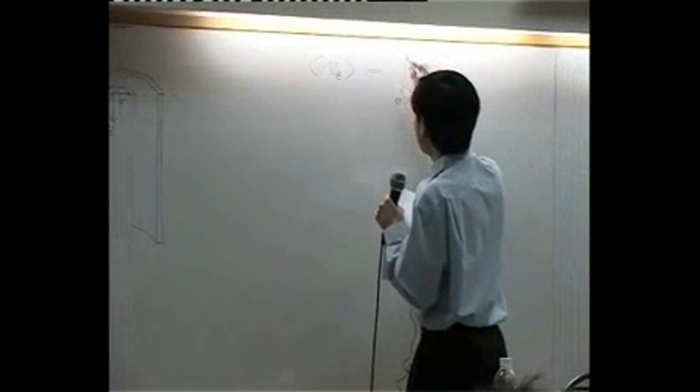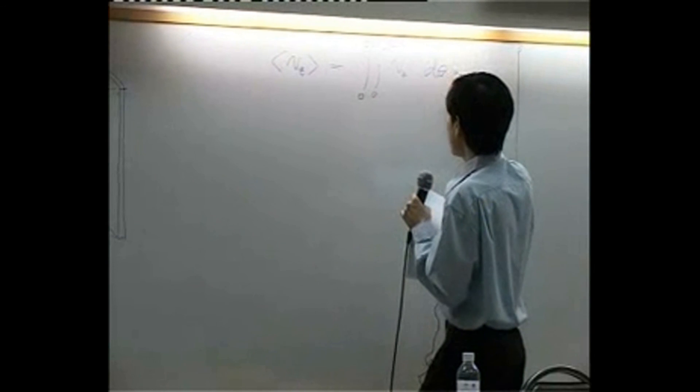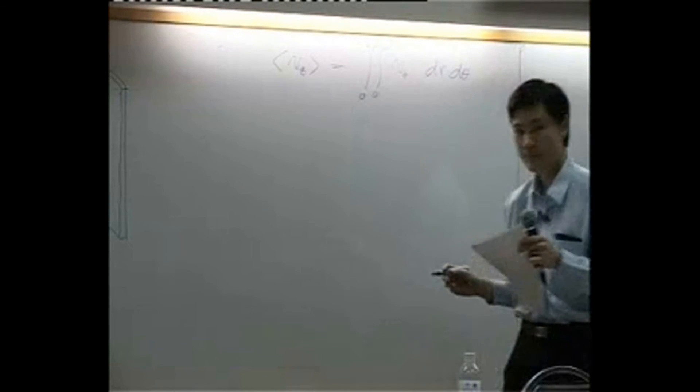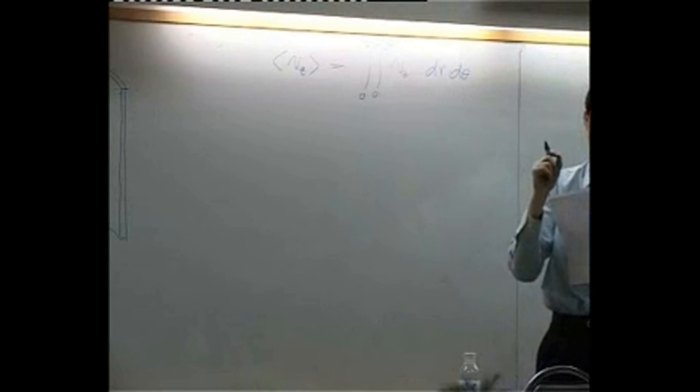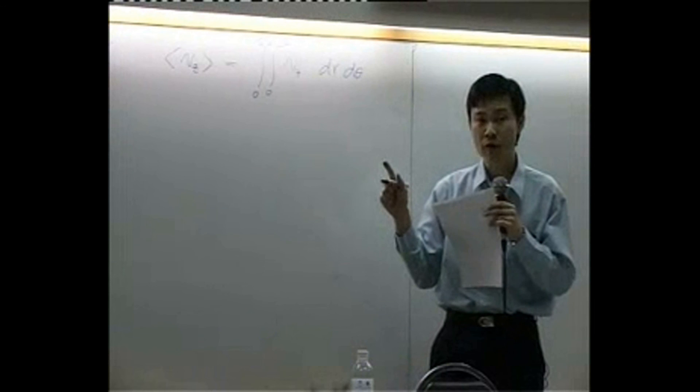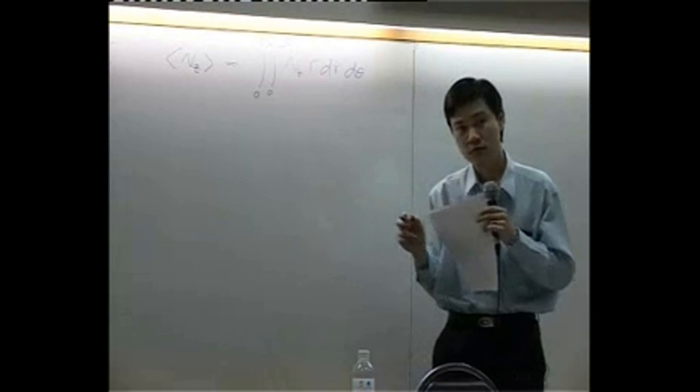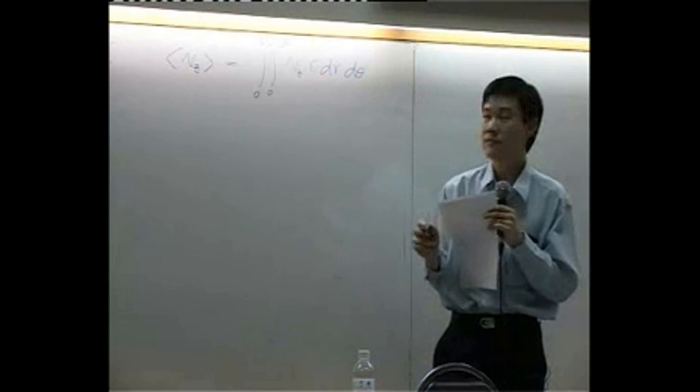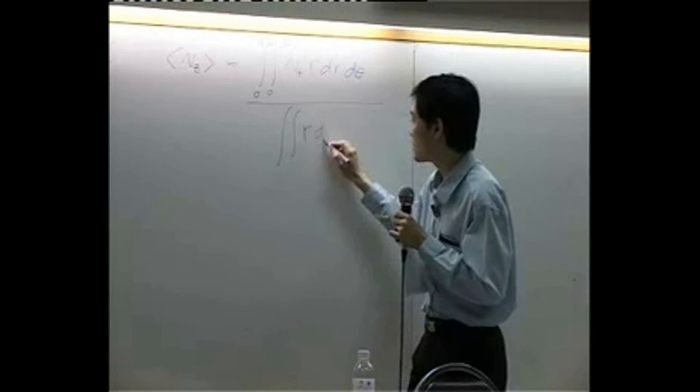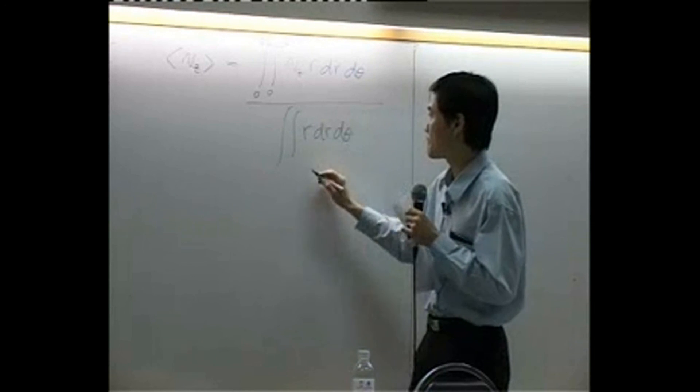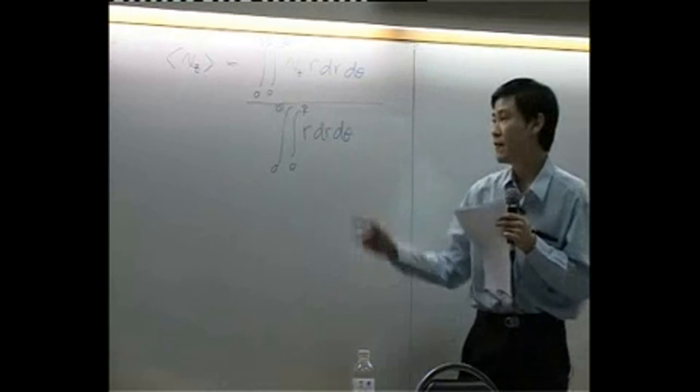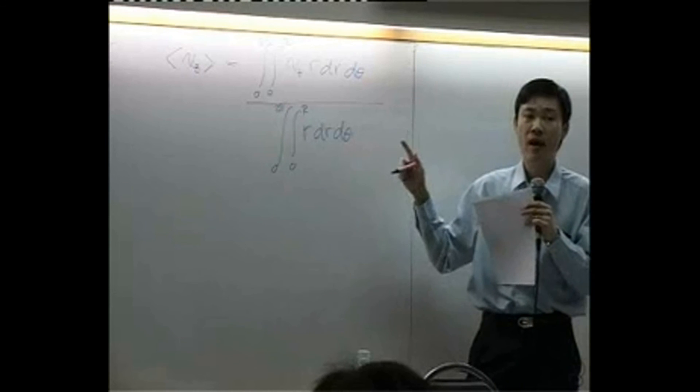According to calculus, if you want to integrate the volume in cylindrical coordinates, you must multiply by r as well, just like this. The area is integrated r dr dθ, zero to R, zero to 2π. If you integrate down here, you get π R squared.